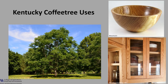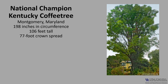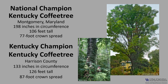It's used as a street tree as far north as Montreal because it resists harsh winters and de-icing salts. It's also used as a landscape tree because of its attractive winter silhouette, and there are several cultivars including espresso, prairie titan, and stately manor — all three of these cultivars are male varieties and therefore do not produce seed pods, which some homeowners find undesirable. The National Champion Kentucky coffee tree is in Montgomery, Maryland: 198 inches in circumference, 106 feet tall, with a 77 foot crown spread. The Kentucky Champion is in Harrison County: 133 inches in circumference, 126 feet tall, with an 87 foot crown spread. Check out the American Forest Champion Tree Register or the Kentucky Division of Forestry Champion Trees for more.